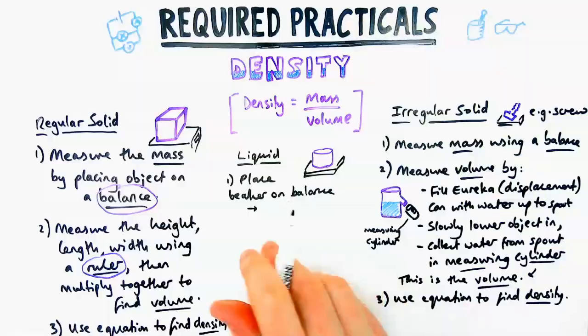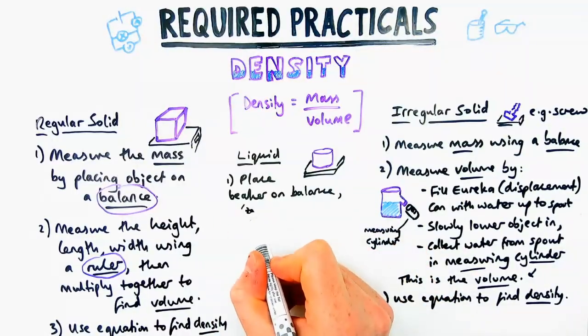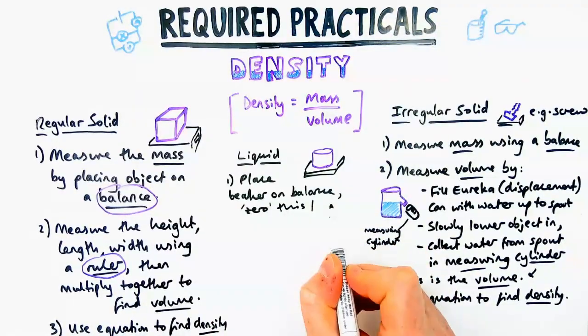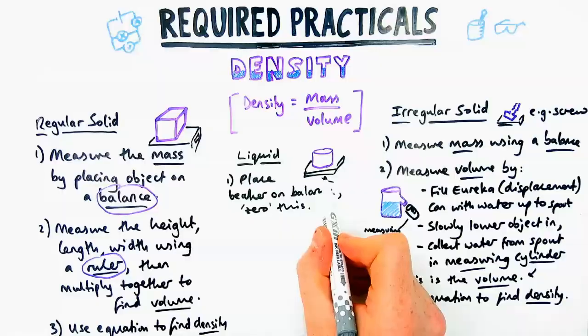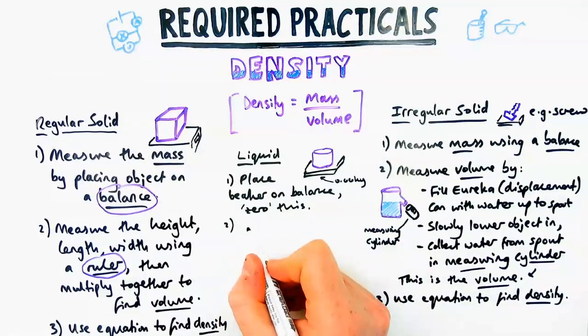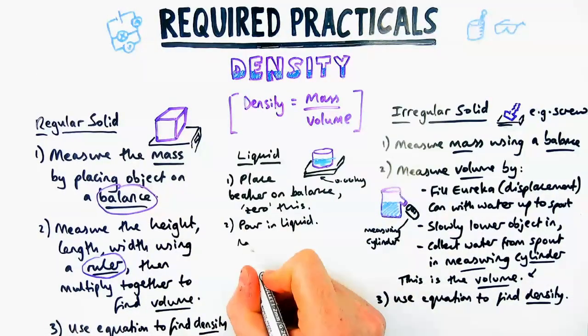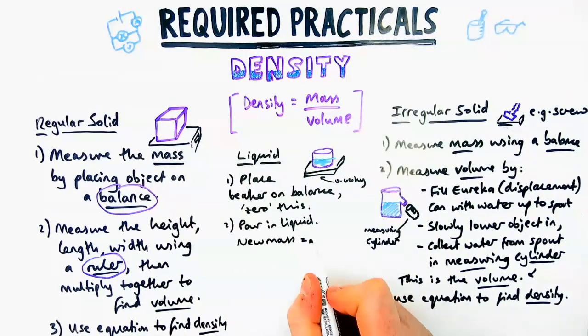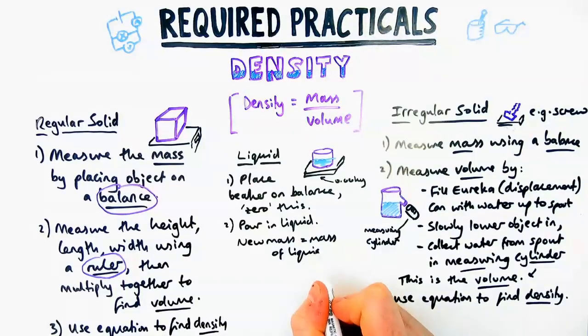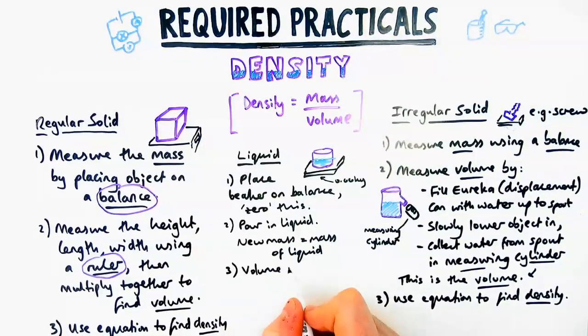Instead of measuring the mass, this time you're going to zero it essentially, so make the mass zero when there's a beaker on it. The reason for that will be clear in a second. Then you're going to pour in whatever liquid you're measuring, and then the new mass, the water reading, now equals the mass of the liquid. You haven't had to do any subtracting - you just zero the start and that becomes easier.